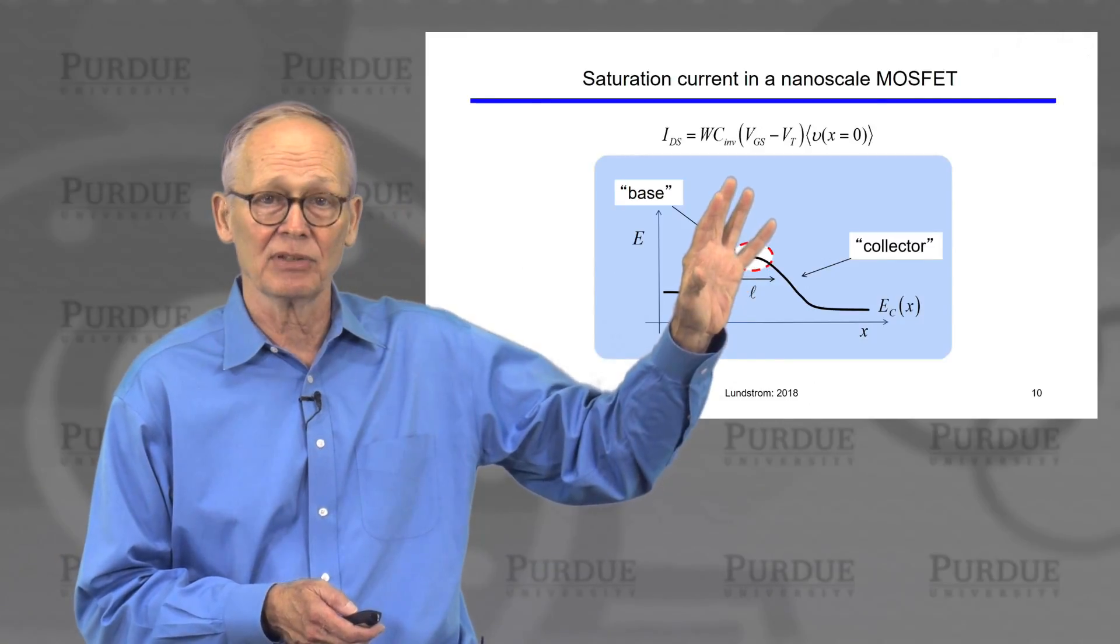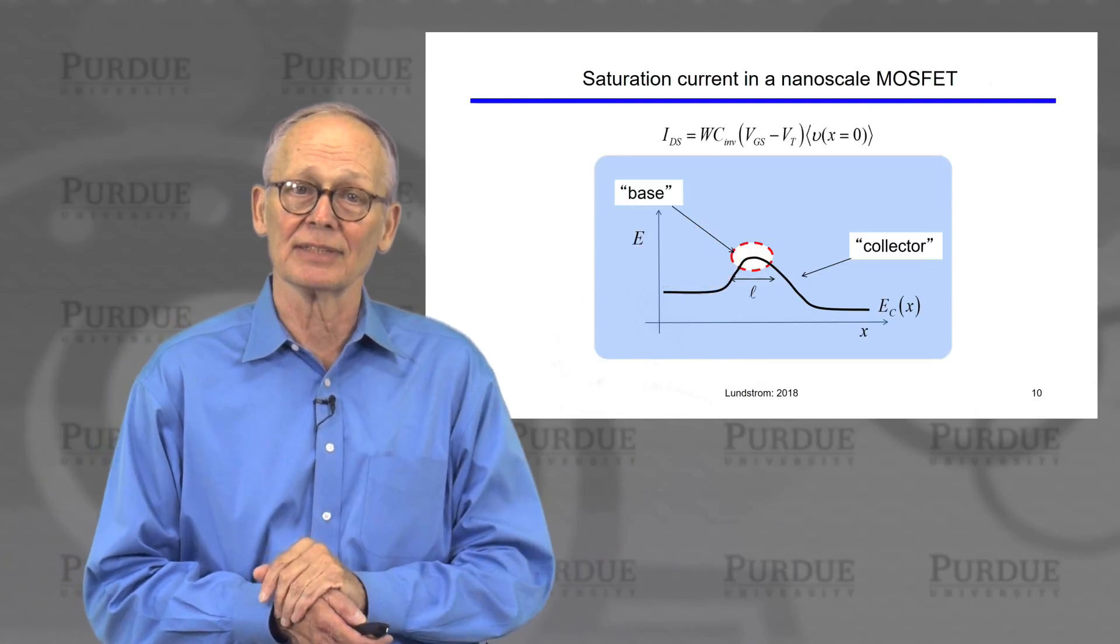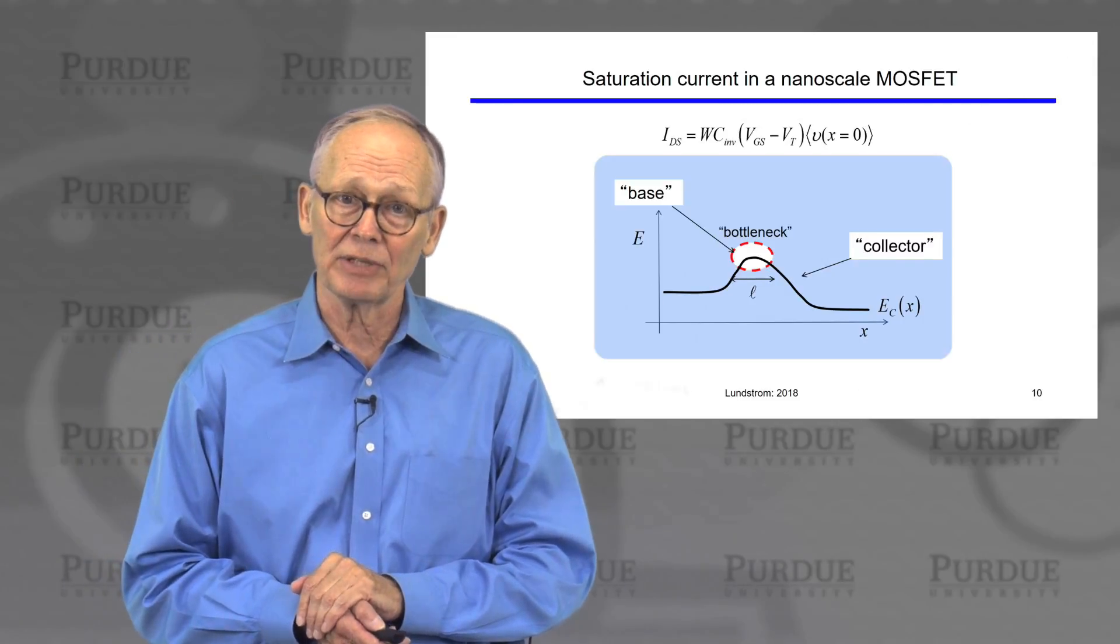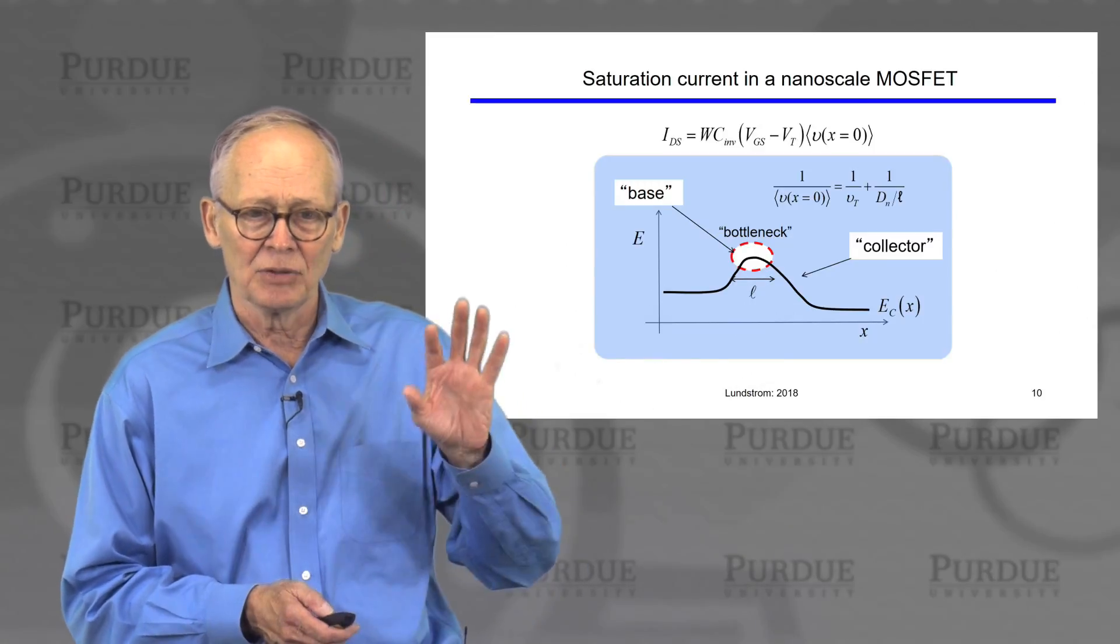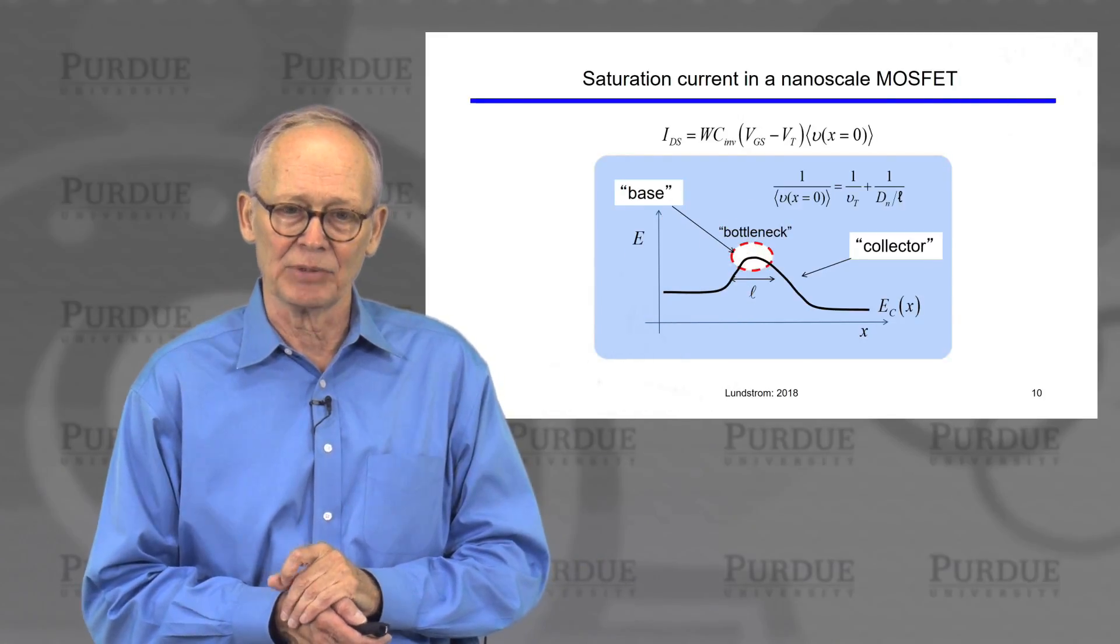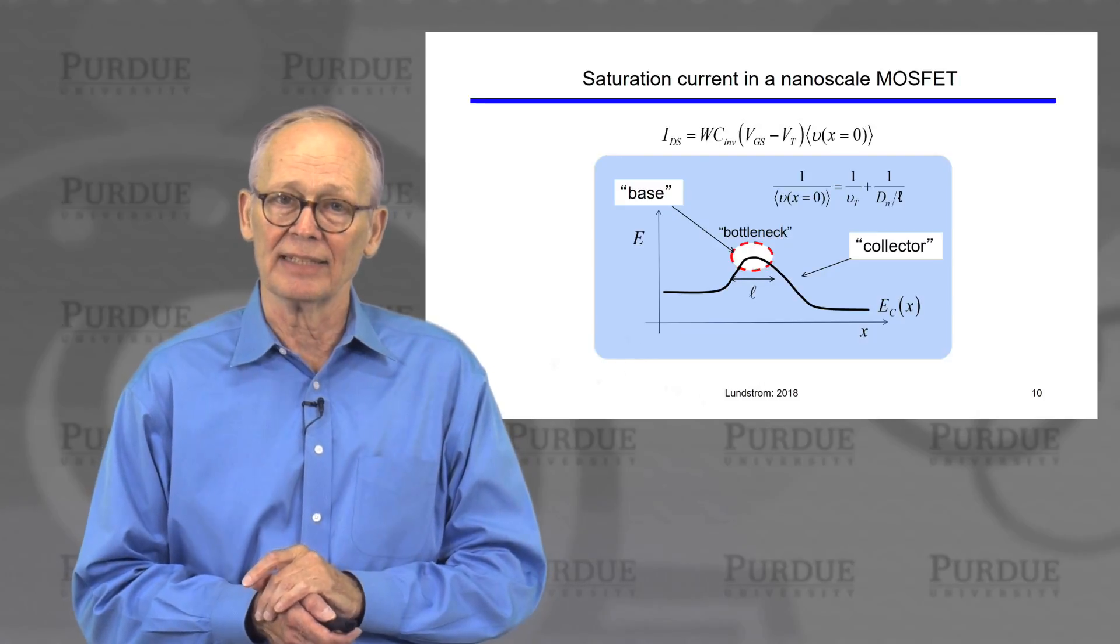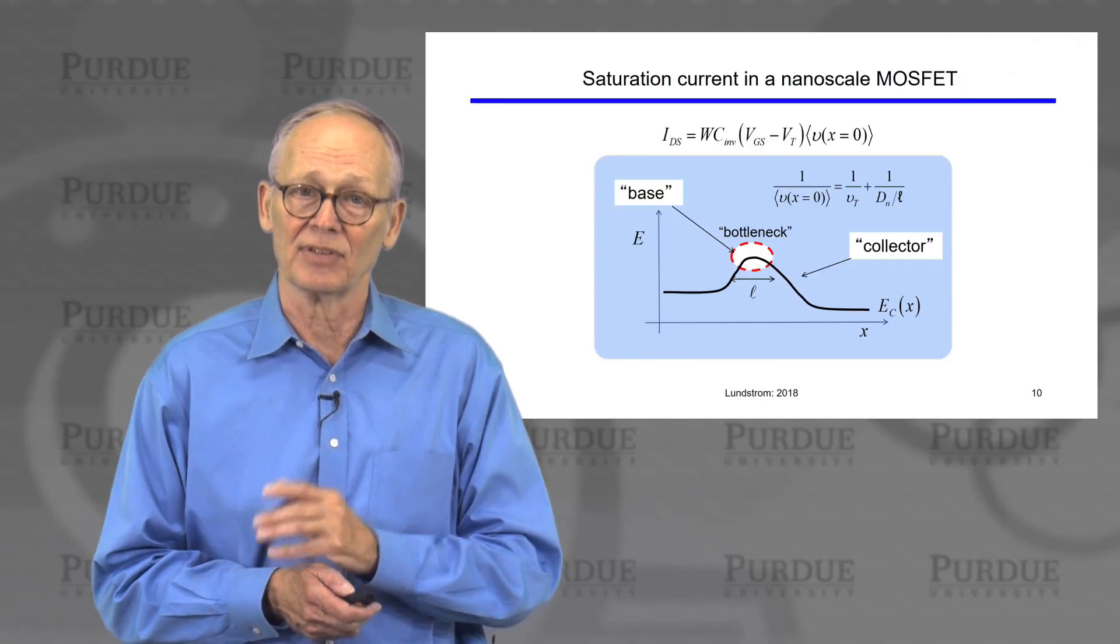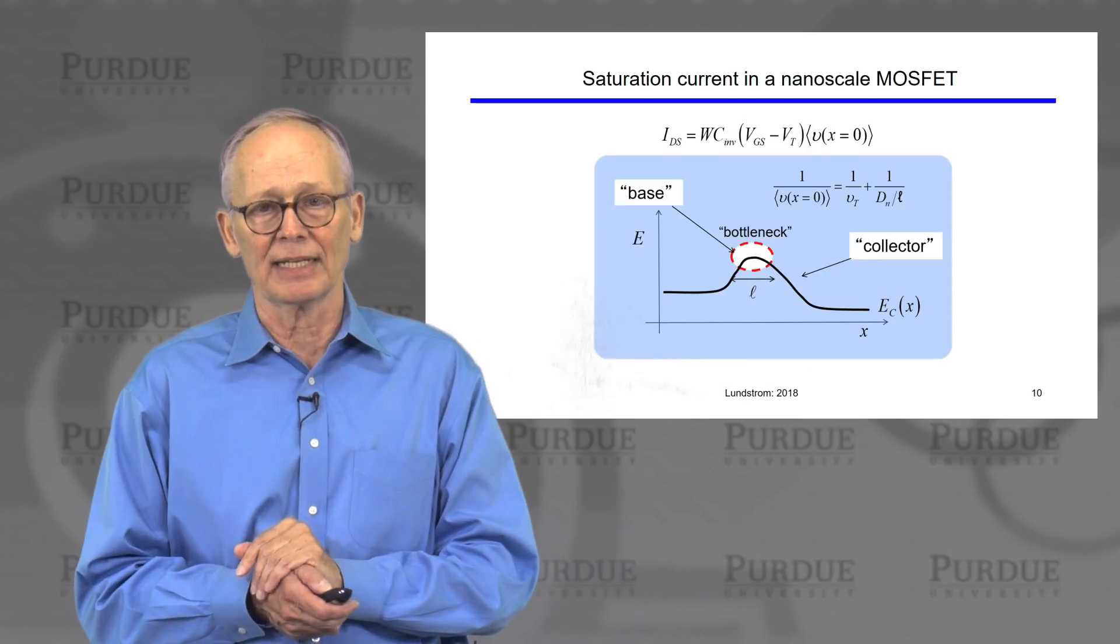We could think of this high field region near the drain as like a collector of a bipolar transistor. There's a large electric field there that sweeps anything across, anything that is able to diffuse across this low field or base region. So this is our bottleneck region. This region we have to diffuse across because the electric field is low. And what our expression says is that one over the average velocity in that region is one over the injection velocity plus one over the diffusion velocity. D over length has the units of velocity, it represents the average velocity of electrons diffusing across that region.